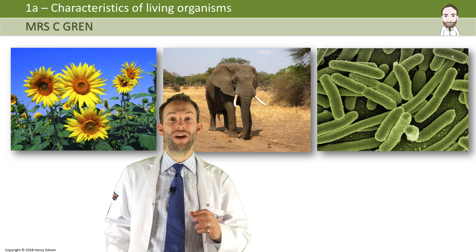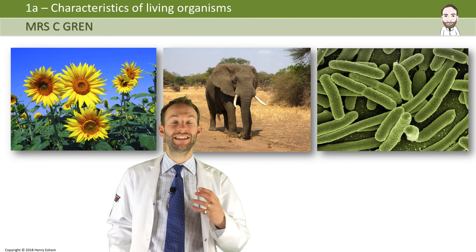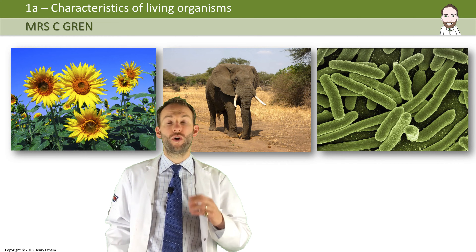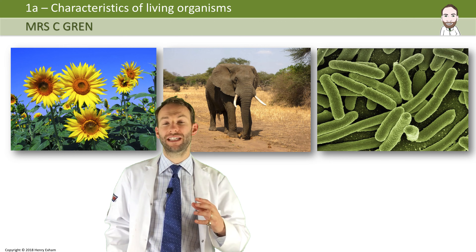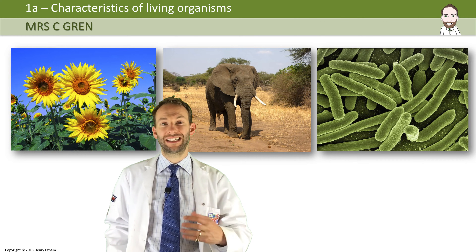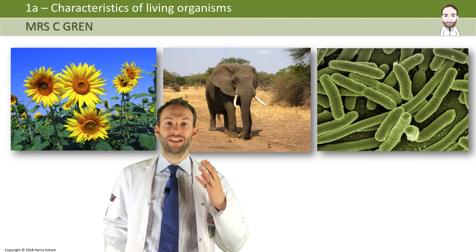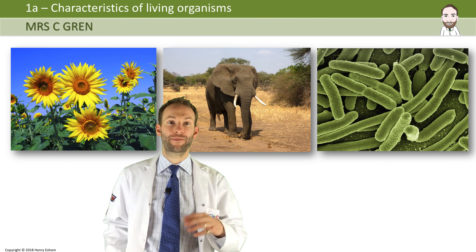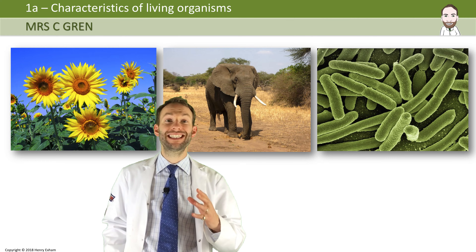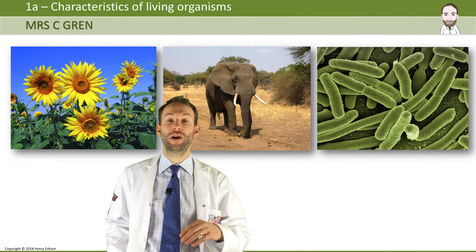Mrs. C. Grenn stands for the eight characteristics of living things. All living things, from simple bacteria to plants to animals, can do all of these eight characteristics of living things. So, what does Mrs. C. Grenn stand for?